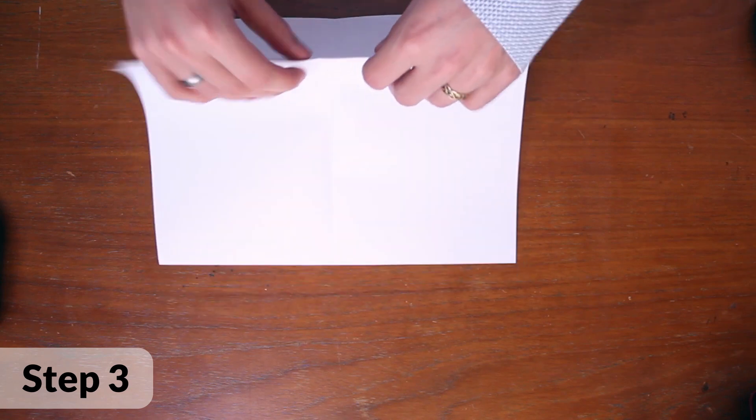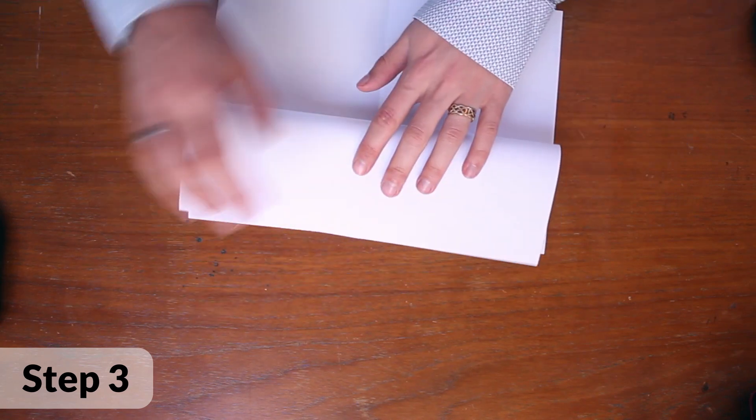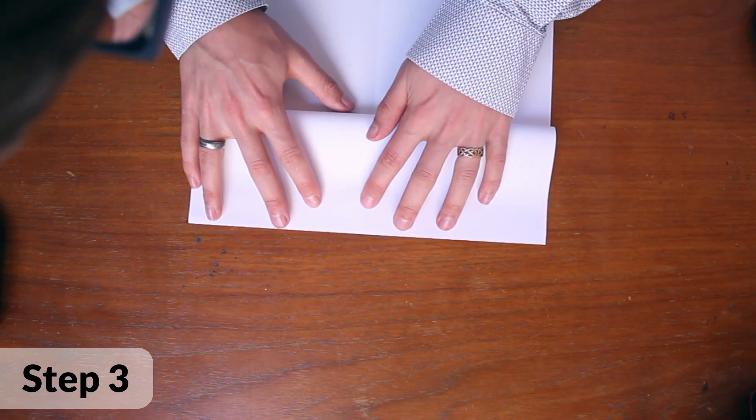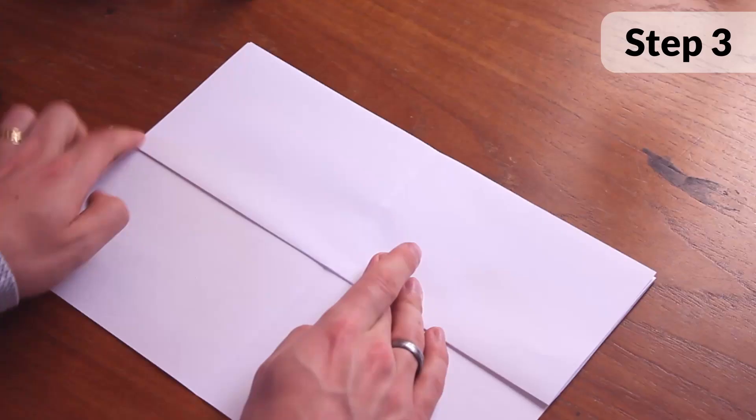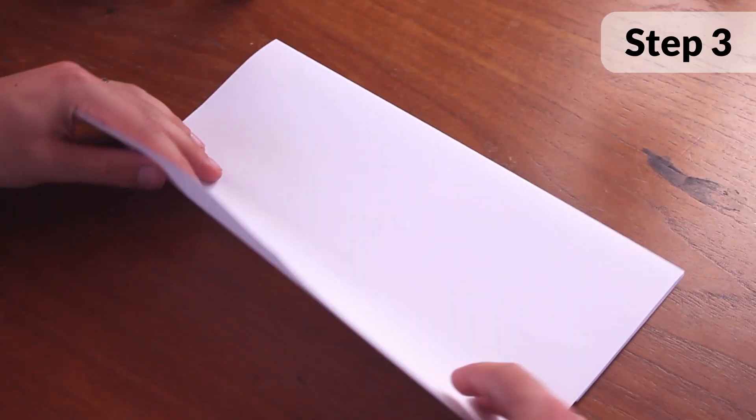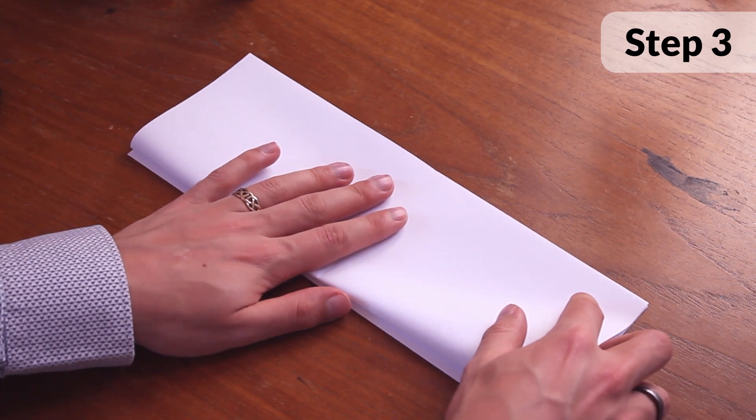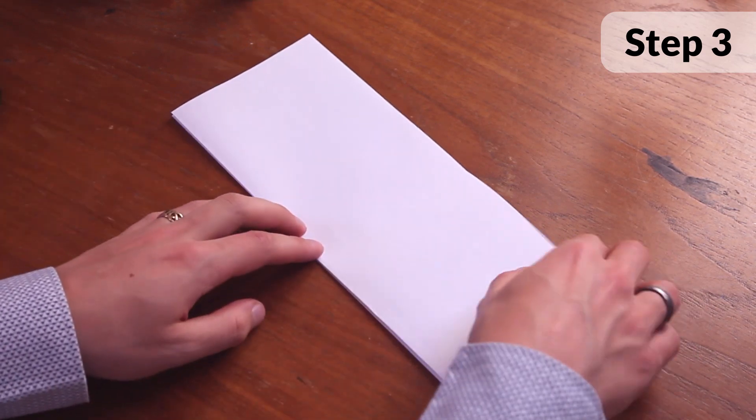Fold the top flap in half lining up the bottom edge with the fold that you've just made. Flip your paper over and do the same thing to the other side. Your paper should form a W shape like this.